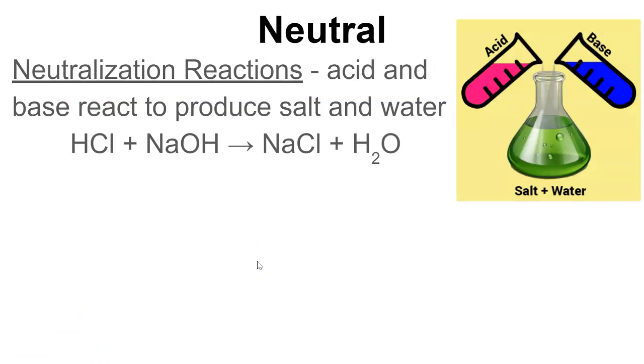Now, neutralization reactions can happen. This is when acids and bases react to produce a salt and water. When acids and bases react together, you always get a salt and water. So here we have hydrochloric acid and sodium hydroxide. They react to produce sodium chloride, which is salt, and water. And when you have a neutralization reaction, remember, neutral on the pH scale is a 7. So what's happening is we're getting this reaction to bring the solution down to a 7, or up to a 7, depending.